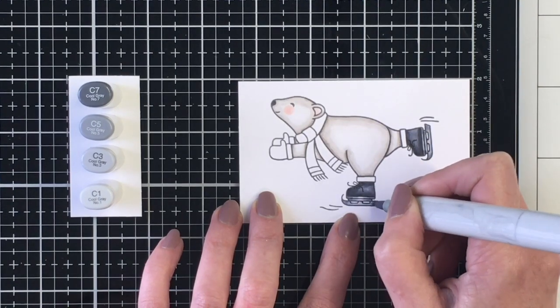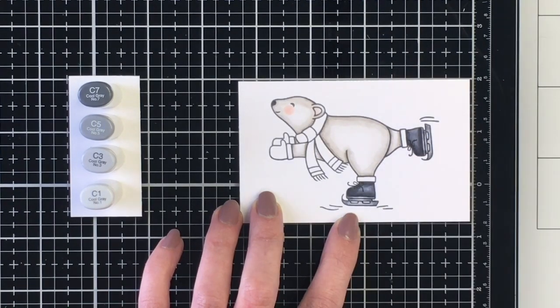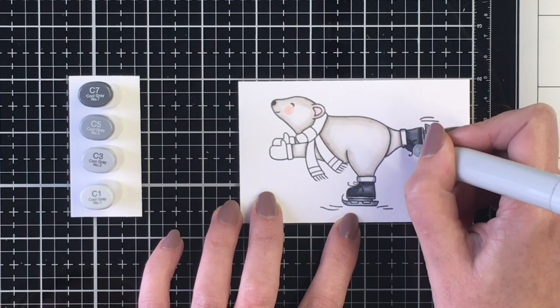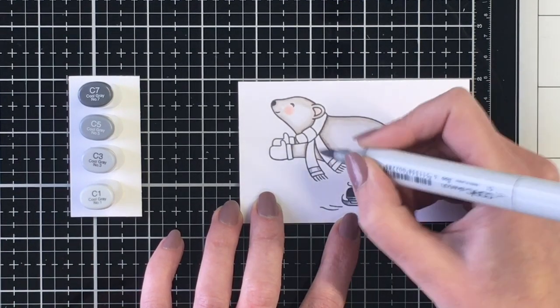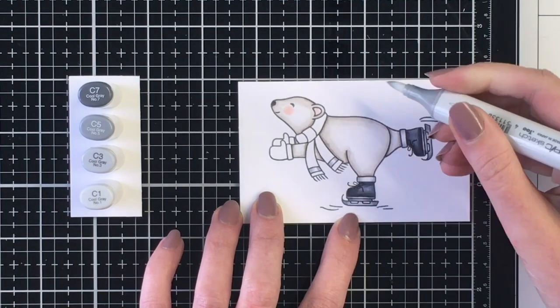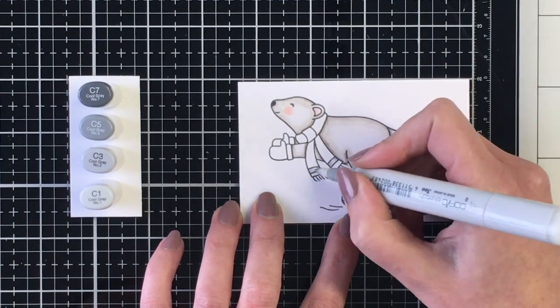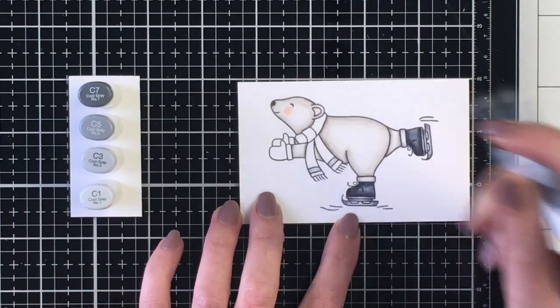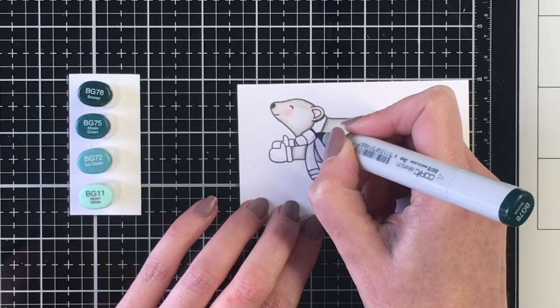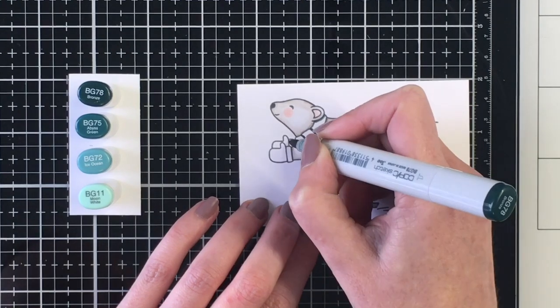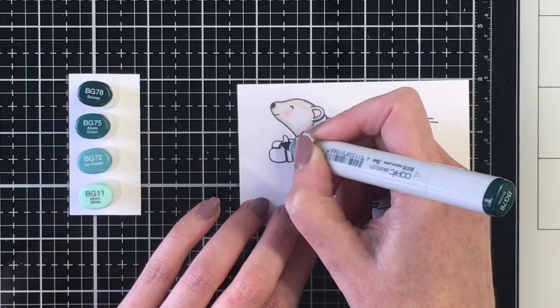Now for the mittens and the scarf, I'm going to bring in one of my favorite sort of newer color combinations in this kind of tealy color. And I'm going to choose those colors because they match really well with the distress inks that I'm going to be using to create the little pond that he is skating on.